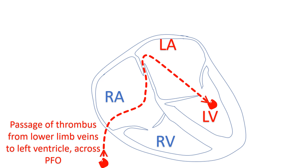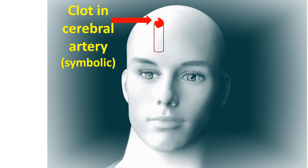But small clots from lower limb veins or veins of the abdomen can occasionally pass across the PFO to the left atrium. This is a risky situation. The clot can move from the left atrium to the left ventricle and then to the aorta, and from there to any part of the blood circulation. This is known as paradoxical systemic embolism originating from the venous side. If the embolism gets lodged in a cerebral artery and blocks it, a stroke may occur. The most important problem with paradoxical systemic embolism is stroke, though it can also get lodged in any other artery of the body and cause damage to that region.